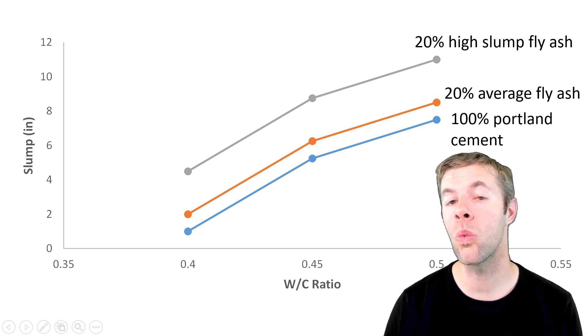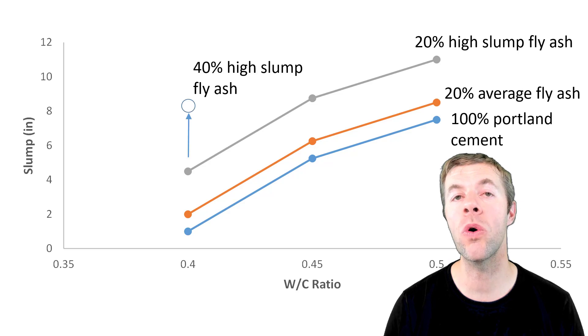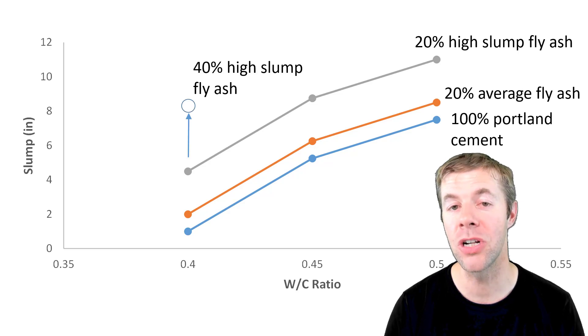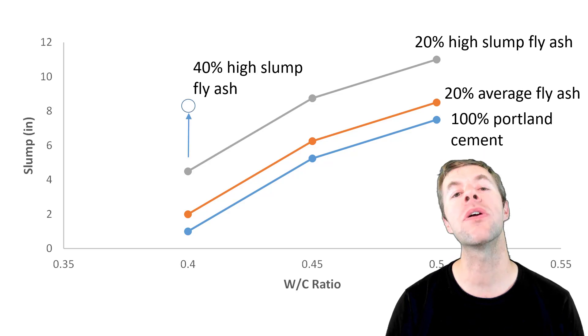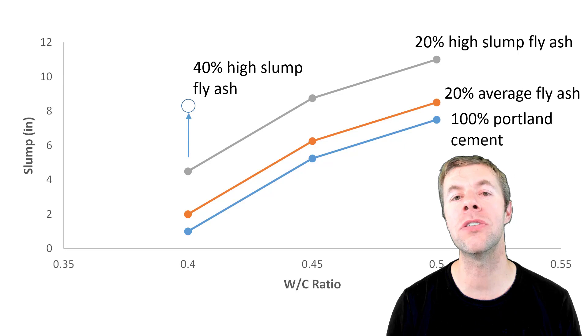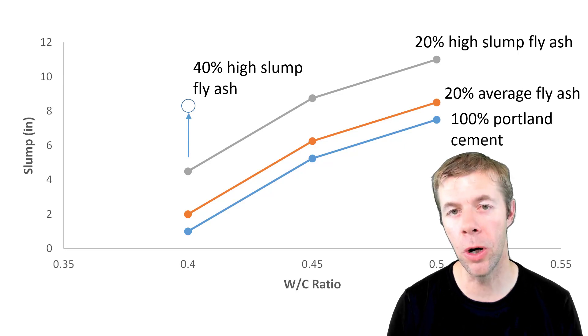And if you're willing to go up to 40% fly ash replacement, I think you could get as high as eight inches of slump in that concrete at a 0.40 water to cement ratio.